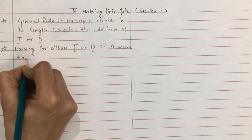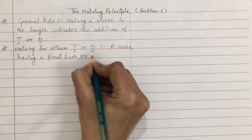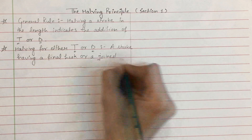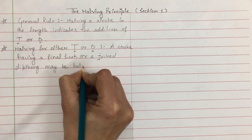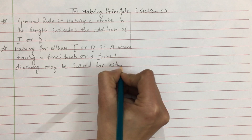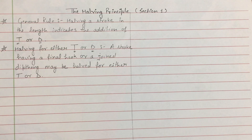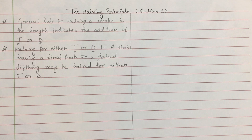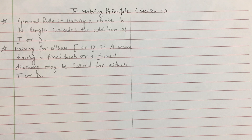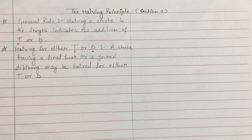जहाँ पर किसी stroke के साथ final hook होगी या joint diphthong होगा, उस case में stroke half किया जा सकता है — T या D किसी के लिए भी। For example, अगर आपको word लिखना है 'pave' — P and V, simply लिखा जा सकता है। यहाँ पर final hook है, हमारी condition पूरी हो रही है।